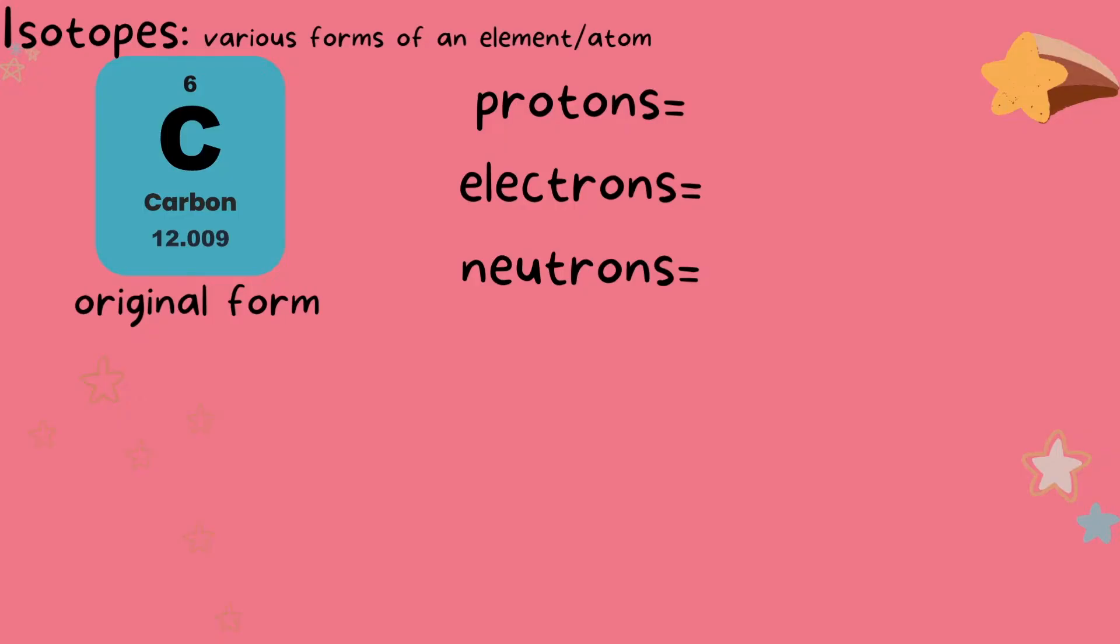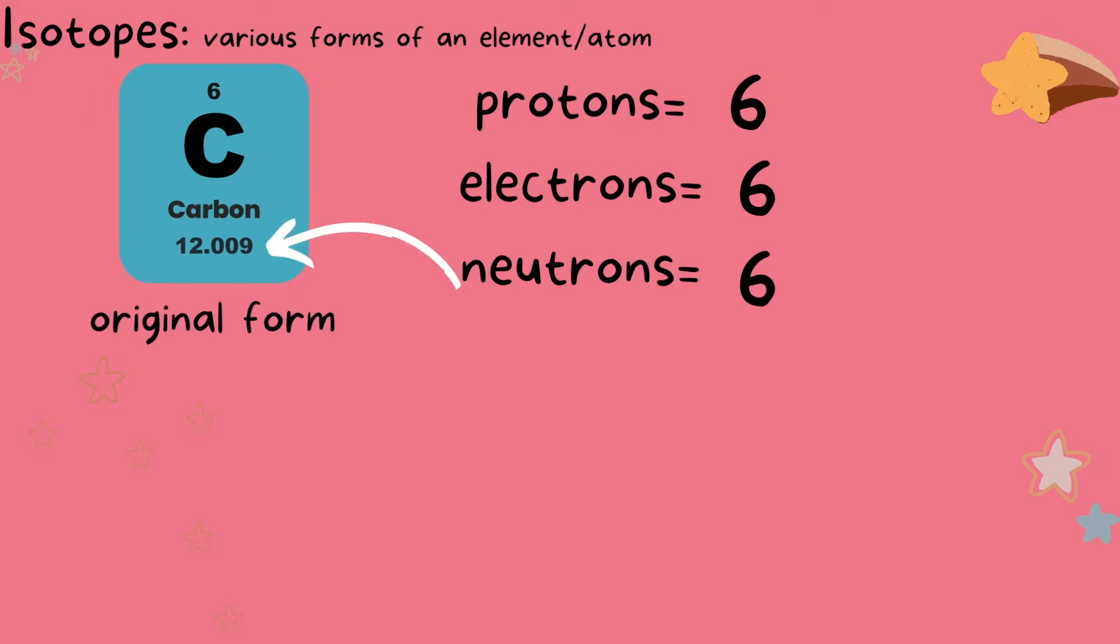Let's take carbon for example. This is carbon right off of the periodic table, so it is in its original form. We know it has six protons. It has six electrons because we know it's neutral. We know it's neutral because the example is right off the periodic table. Also there is no indication otherwise. We know it also has six neutrons. We calculate this by subtracting the atomic number by the mass number.